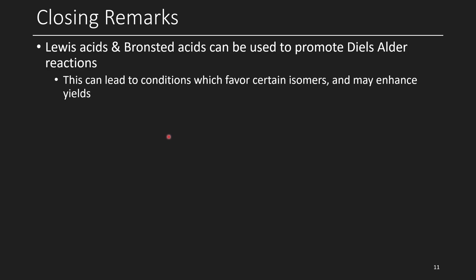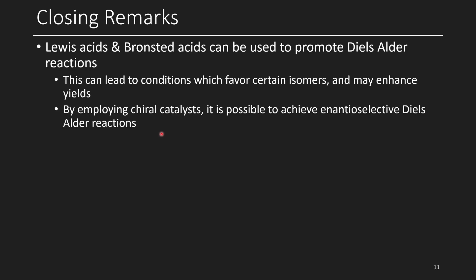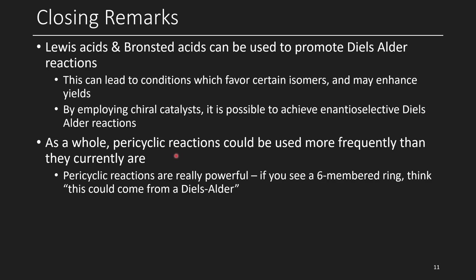Some closing remarks: Lewis acids and Brønsted acids can be used to promote the Diels-Alder reaction. When you use different catalysts — Brønsted acids or Lewis acids — you'll have conditions that favor certain isomers and may enhance yield, but they change all the chemistry, so these usually need to be screened one at a time. If you employ a chiral catalyst, you might get enantioselective chemistry, although you often still get small amounts of other enantiomers. Because enantiomers behave identically chemically with achiral substrates, it can be challenging to remove them.